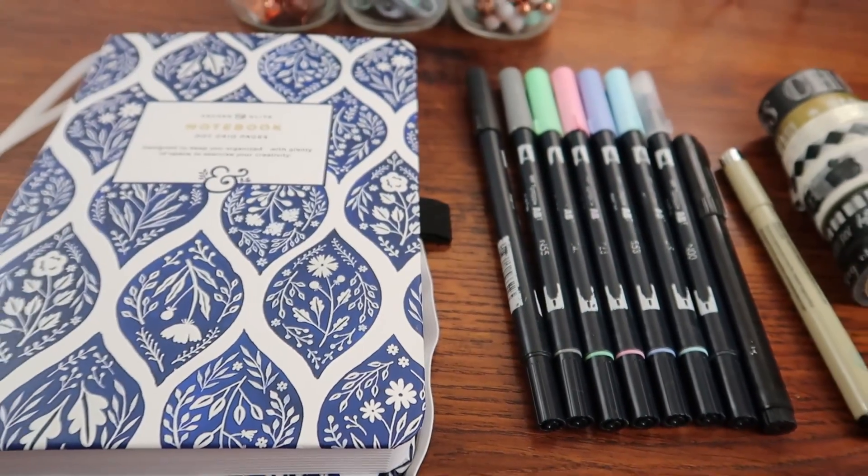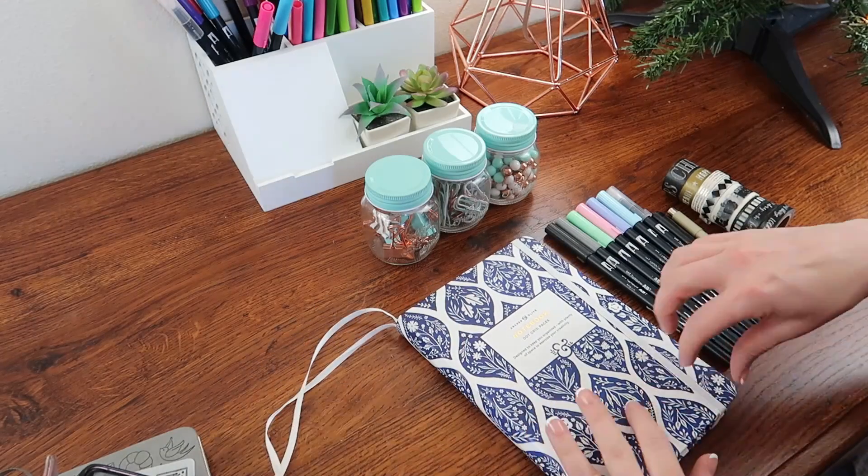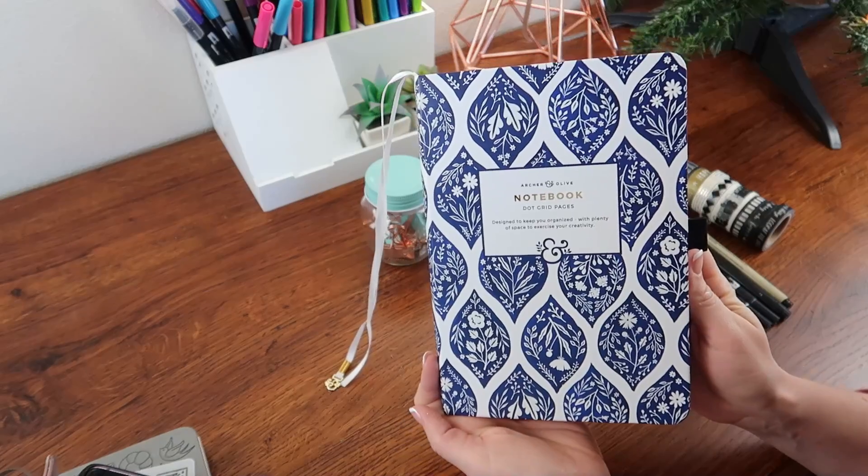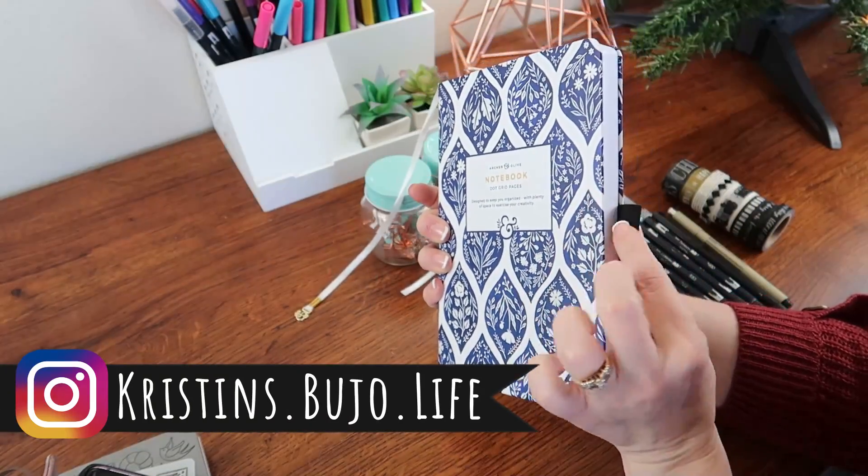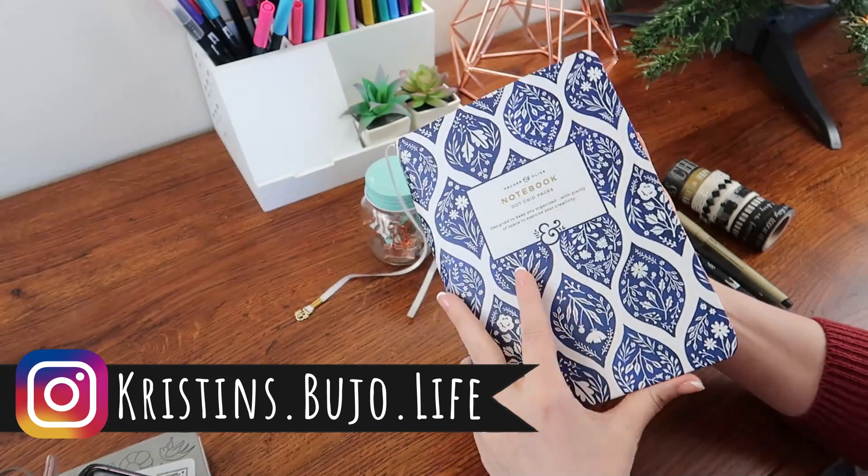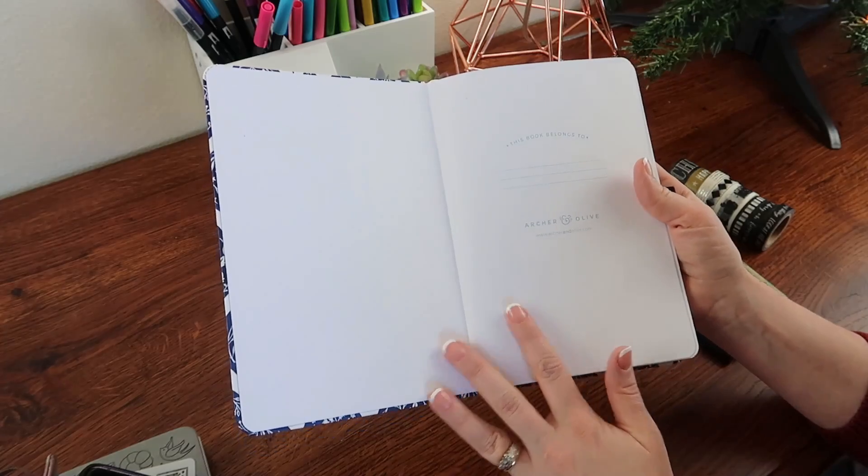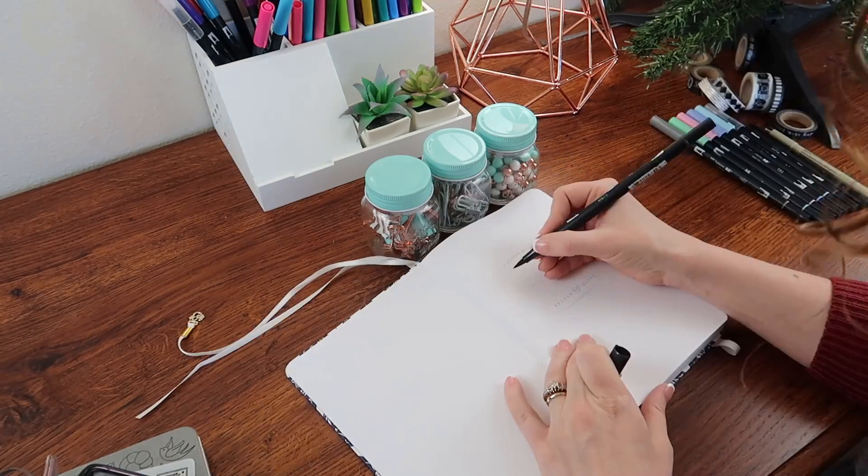I have these pastel Tombow markers that I love, my Micron pen, and just a few other items. I also have my new 2020 notebook and this is from Archer and Olive and I am in love with it. I didn't know that there was going to be writing on the front of the planner so that was unexpected and I don't love that part of it, but it's still beautiful and I'm definitely going to still use it.